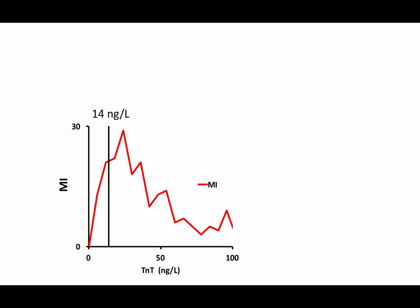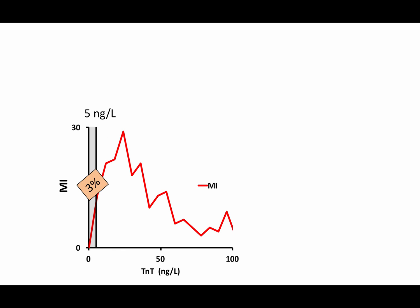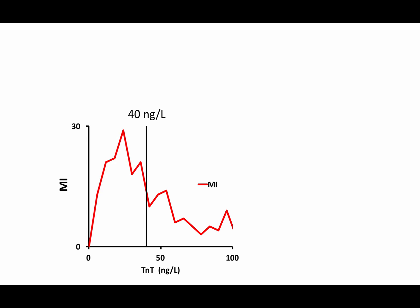The first statistical tool describes what fraction of patients with myocardial infarction have Troponin T-levels below my patient's level. This is simply one minus sensitivity at the patient's Troponin T-level — that is, the fraction of patients with myocardial infarction presenting with Troponin T-levels below the actual patient's level. In our dataset, one minus sensitivity is 12% at 14 nanograms per liter, 3% at 5 nanograms per liter, and 61% at 40 nanograms per liter.